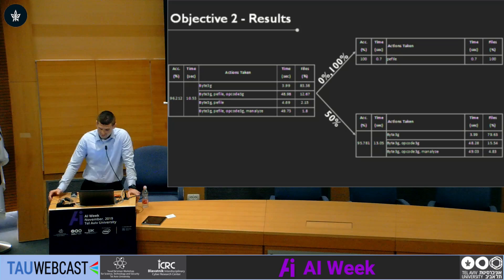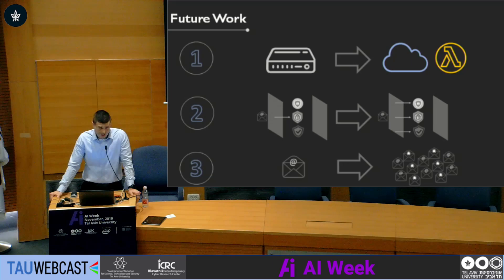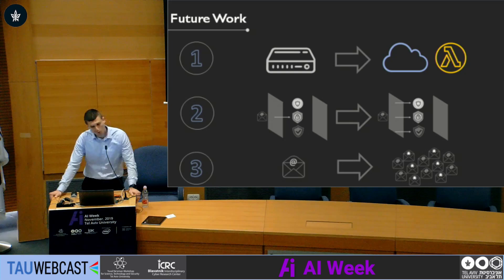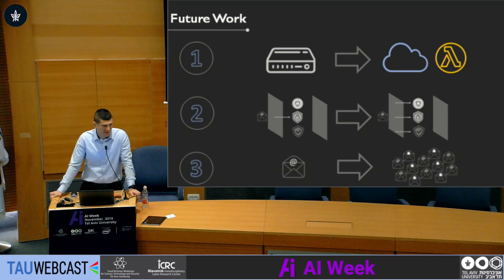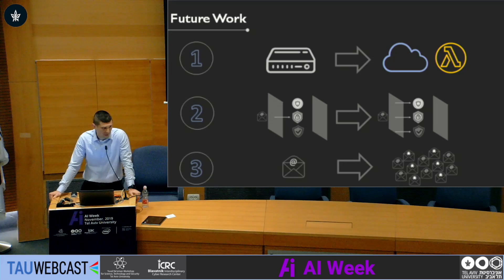Lastly, our future work. First, we are currently implementing our method on cloud-based and serverless environments — on AWS Lambda, we found we reduced cost by 80% for five classifiers. Second, we'll be training our model with the ability to send a specific file to different classifiers in parallel, which will create an exponential growth in the action space, and is currently under implementation. Third, we would like to extend our method to process batches of files instead of one at a time, generating a multi-objective optimization problem using two reinforcement learning algorithms, where one algorithm acts as the environment of the second.